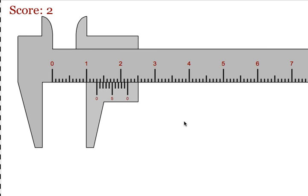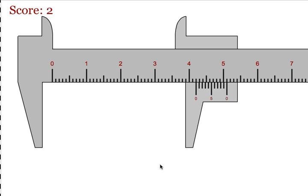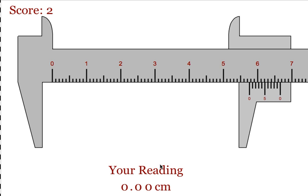If the students get one wrong, their score will be reset to 0. They have to get 4 in a row perfectly right.